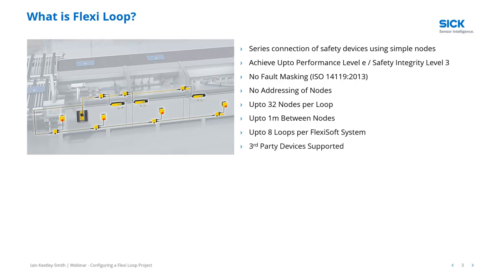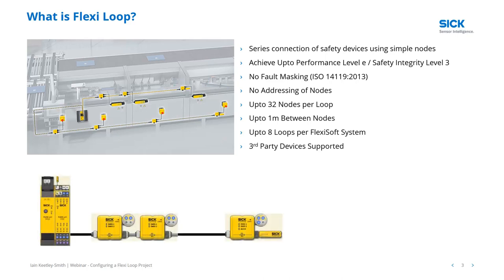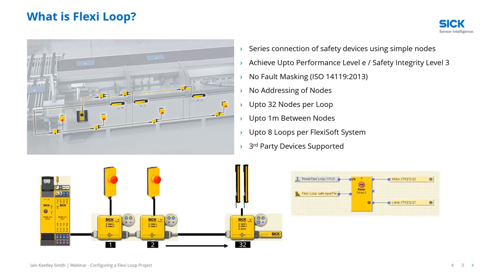One great thing is that third-party devices are supported on the loop. You could use anybody's e-stop, gate switch, light curtains, or scanner — from the SICK and nodes point of view, it's just an input coming into the system. Physically, you have your FlexiSoft CPU and then nodes one through to 32, with your devices connected off those nodes — for example, two e-stops and a light curtain. You then write your FlexiSoft code, validate it, verify it, make sure it's doing as expected. It's as simple as that.